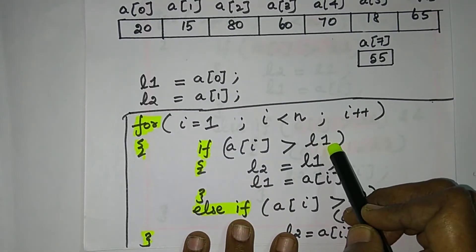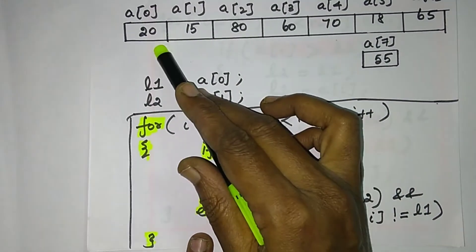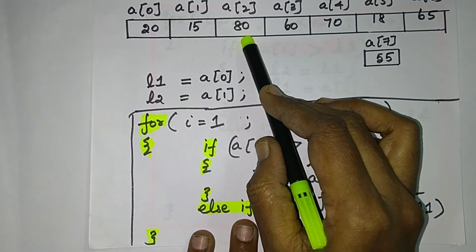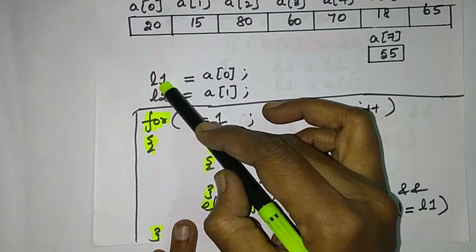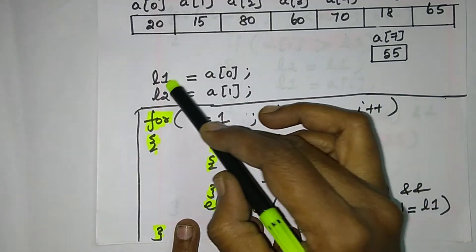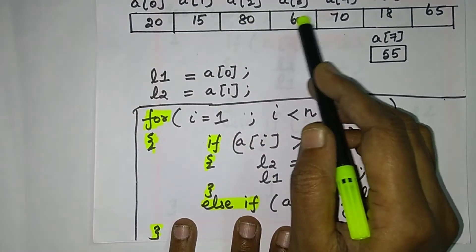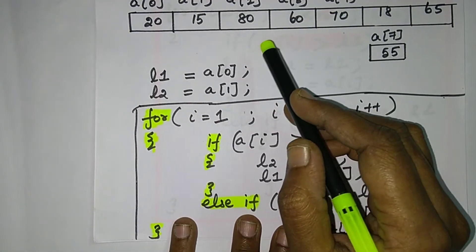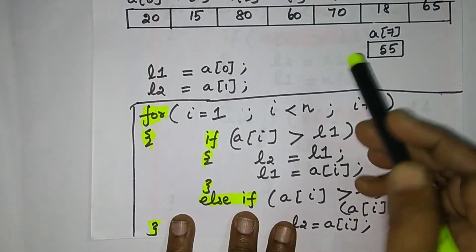Suppose this element is greater than L1. For example, 80 is compared to 20. This is the first one. i equals 2. L1 is compared and updated. L2 is updated as well. So if L1 equals 90, then L2 equals 18 — the second largest is assigned at that time.